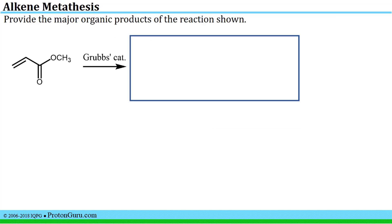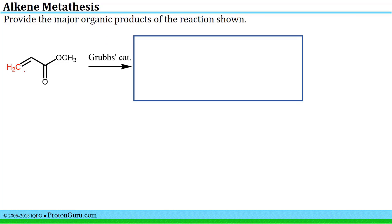Our first question asks us to provide the major organic products of this reaction. As soon as you see the Grubbs catalyst you should think about alkene metathesis. Many of the alkene metathesis reactions we saw in the primer involve evolution of ethylene — removal of a CH2 unit from one side of an alkene — and the metathesis reaction will always break a carbon-carbon double bond. So it's helpful to identify the CH2 unit that will be lost as ethylene, and that leaves this fragment.